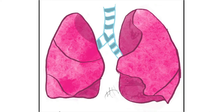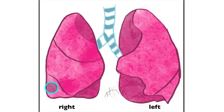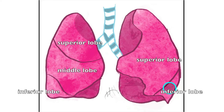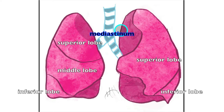Here we see a right and a left lung. The right lung has three lobes. The left lung only has two lobes — a superior and an inferior lobe — whereas the right lung has a superior, middle, and inferior lobe. This region between the right and left lung is the mediastinum, where the heart resides, and the lungs sit directly on the diaphragm.